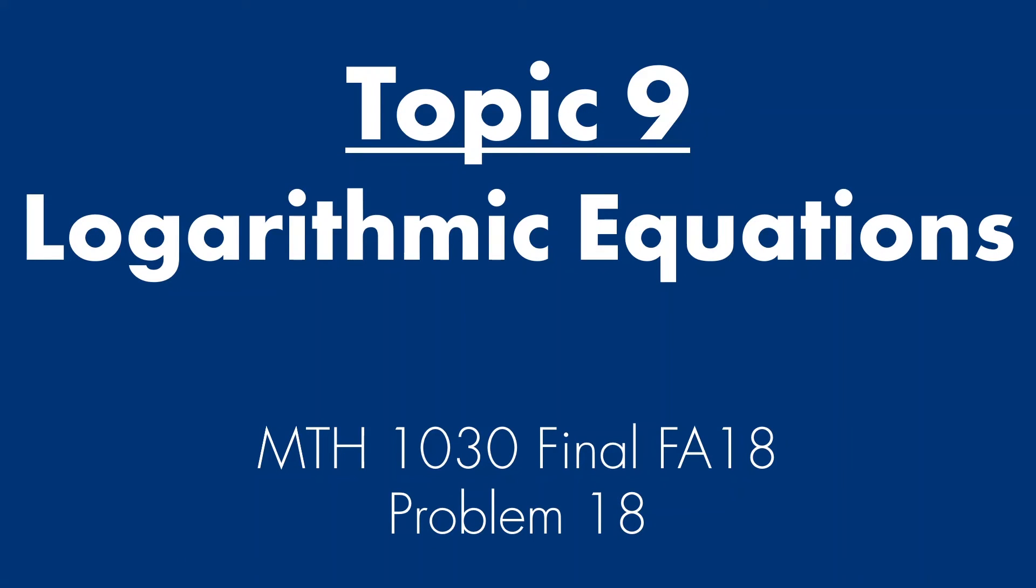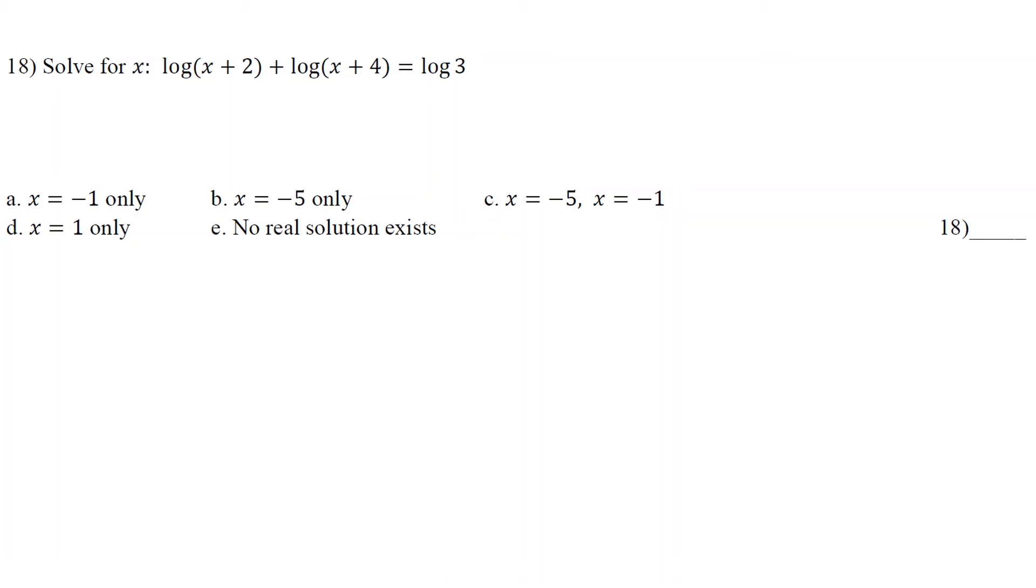Topic 9, logarithmic equations. Problem 18 from FA 18 final. All right, so we look at the logs. Logs have the same exact base. So we can combine them. So it's x plus 2 times x plus 4 immediately equals to 3. So if I foil it, I get to have x squared plus 6x plus 8 equals 3.